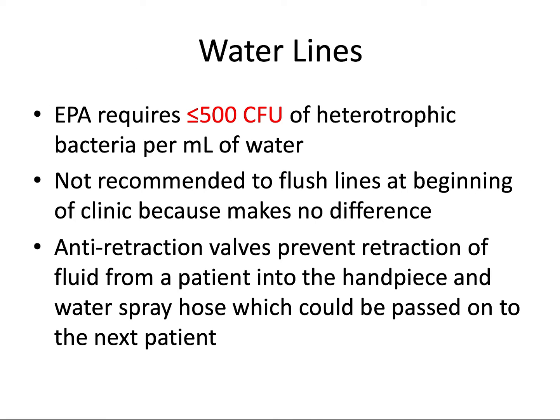Regarding water lines: the EPA, which is concerned with transport of materials in and out of the office, requires less than or equal to 500 CFUs of heterotrophic bacteria per milliliter of water. A CFU is a colony forming unit — a unit used to estimate the number of viable bacteria or fungal cells in a sample of liquid. The lower that number, essentially the safer and cleaner that water is.